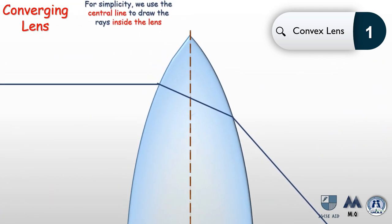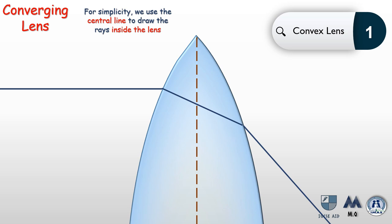One more useful simplification: instead of showing the refracted ray inside the lens, we can just use the central line. For example, if the ray extends to the central line and then connects to the refracted ray, we can simply connect them directly. This makes drawing diagrams much easier, as we don't need to calculate the refracted angle at each surface — we just use the central line.